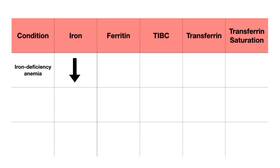So how would this look on our lab results? As you would expect, the iron level would be low. And because we have low iron stores, our ferritin will also be low. As a result, our body will try to compensate by producing more transferrin, our transport protein, so TIBC and transferrin levels are going to be increased. Even though our transferrin levels are higher than we'd expect, they are not bound by iron as much as we'd like them to be, so the transferrin saturation is going to be low.